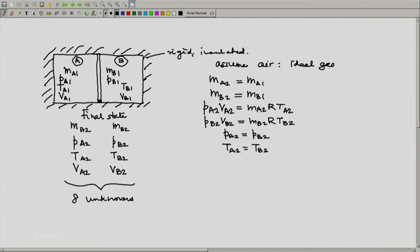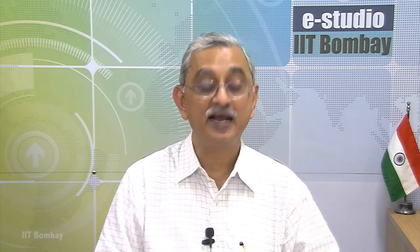One is the full system is rigid. Consequently, the volumes of the individual subsystems may change. VA may undergo a change. VB may undergo a change. But the total volume remains unchanged.